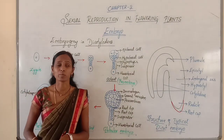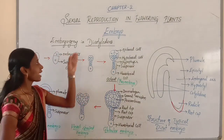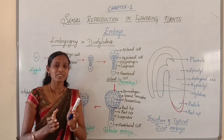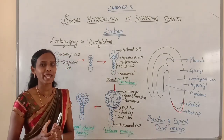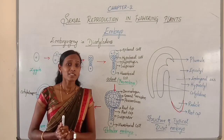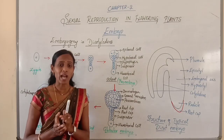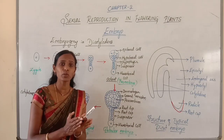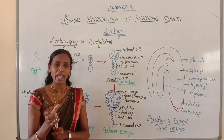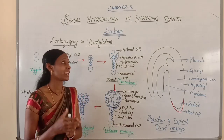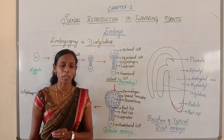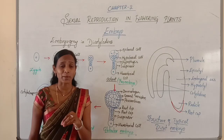In this class, we are going to discuss about the embryo. This embryo is the endosporophytic plant present within the seed. After fertilization, the ovule develops into seed and the zygote develops into embryo. That is why the embryo is called the endosporophytic plant present within the seed.